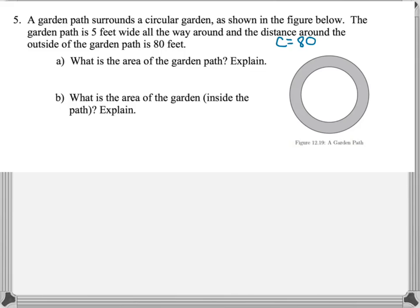This 80 feet would be our circumference, the distance around the circle. We can use this to find our diameter, since circumference equals pi times diameter. So our diameter will equal 80 divided by pi, giving us 25.4647 feet.